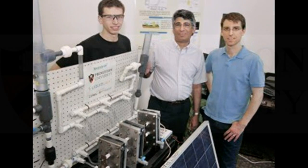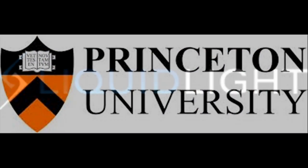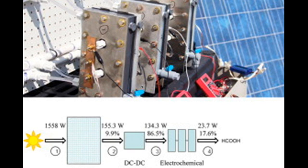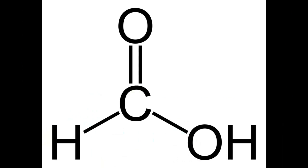researchers at Princeton University and researchers at a New Jersey startup company, Liquid Light, came up with an efficient method for harnessing sunlight to convert carbon dioxide into a potential alternative fuel known as formic acid.